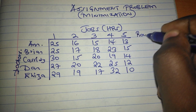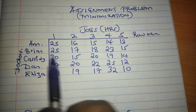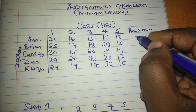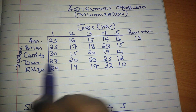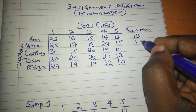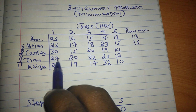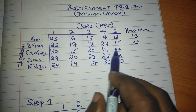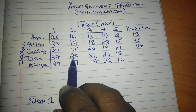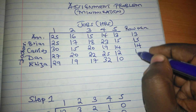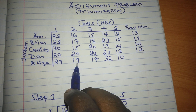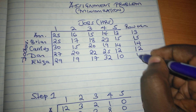Step 1 is to find the row minimum. In the first row we have 25, 16, 15, 14, 13 — the minimum is 13. Second row: 25, 17, 18, 23, 15 — the lowest value is 15. Third row: 30, 15, 20, 19, 14 — the lowest value is 14. Fourth row: 27, 20, 22, 25, 12 — the lowest value is 12. Fifth row: 29, 19, 17, 32, 10 — the lowest value is 10.